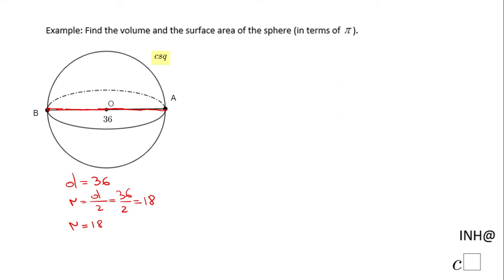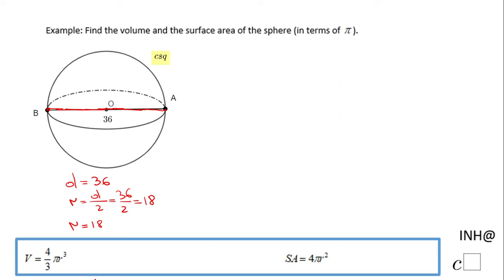And now if we know the radius, we can find the volume and the surface area. I'm going to start with the volume. The volume, as you notice, we have the formula 4 over 3 pi r cubed.